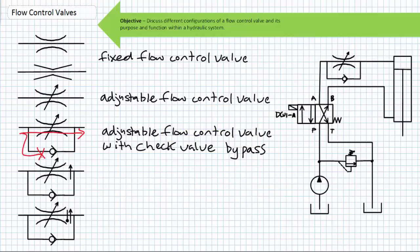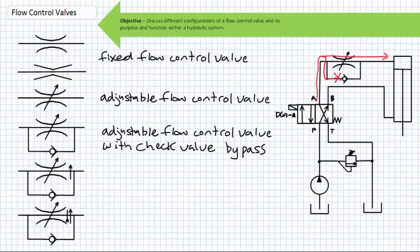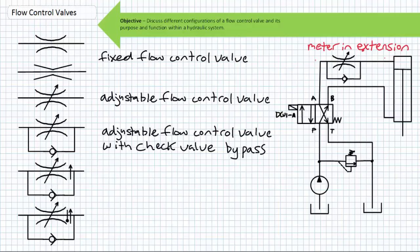For this flow control valve with check valve bypass, flow entering from left to right would force the check valve closed and all flow would be forced through the flow control valve — this is the metered direction. If flow was to reverse direction, the check valve would be forced off its seat and allow free flow, effectively bypassing the flow control valve — this is the direction of free or unrestricted flow. The key to identifying these different modes is to examine the orientation of the check valve.